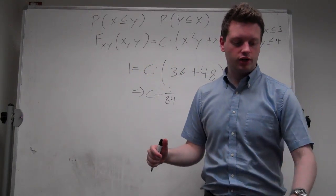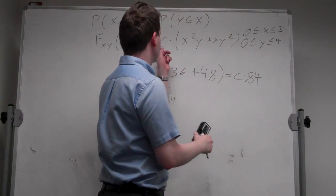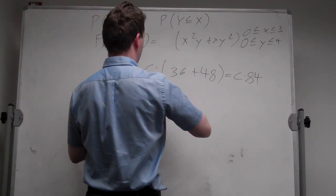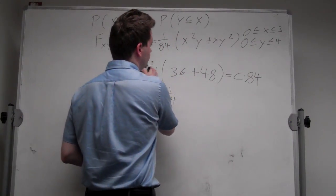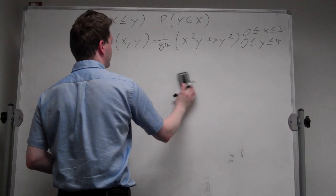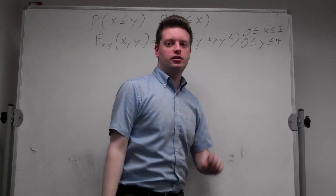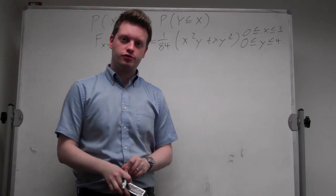Now we can replace c in this function here by 1 over 84, which we just found. Now we found the correct cumulative distribution function.